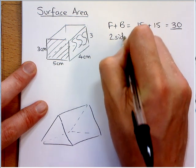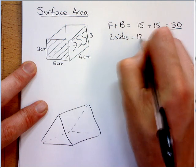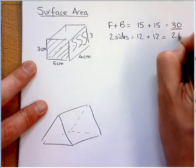I'm just going to write sides. 4 times 3 is 12. And another one of those, that would be 24.